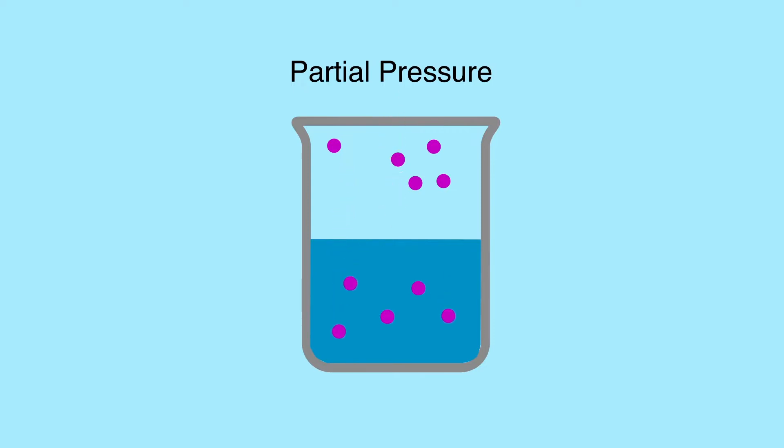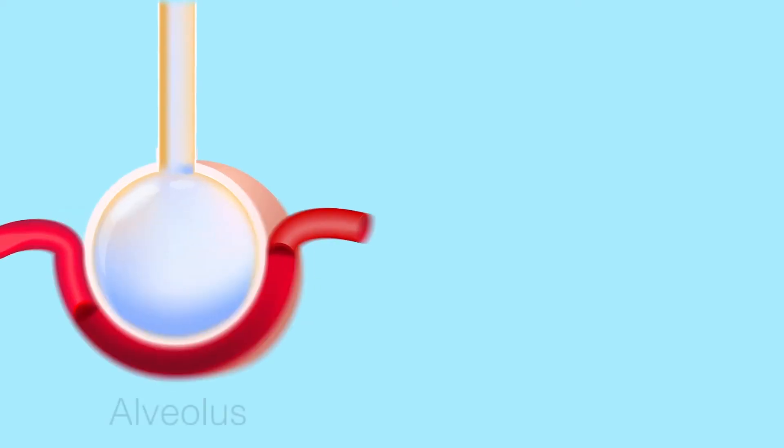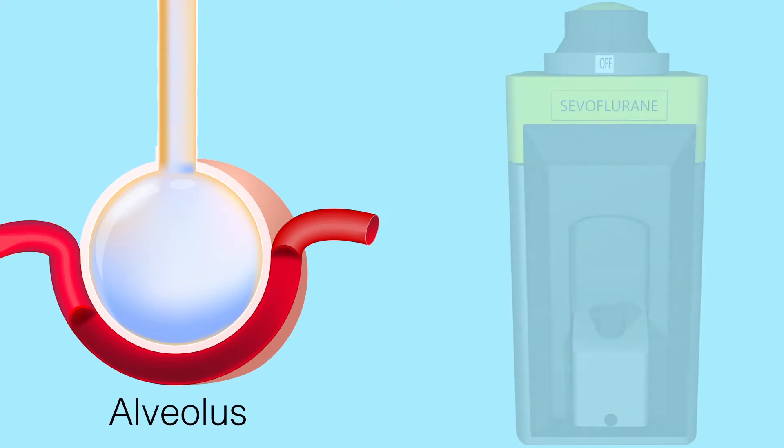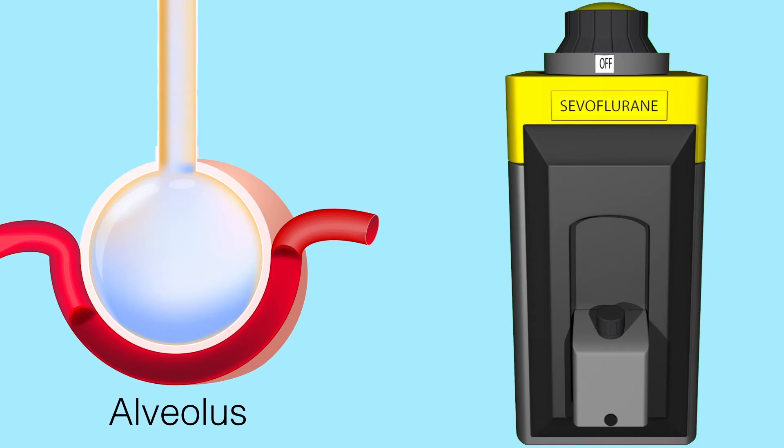We can see this effect in overpressurization. Instead of a container with liquid in it, let's use the alveoli of a patient that we're about to induce with Sevoflurane as our example. For this procedure, our initial goal is an end-tidal concentration of 2% Sevo before the surgeon starts.